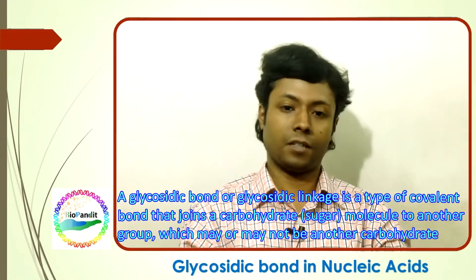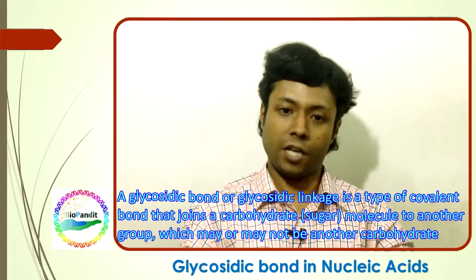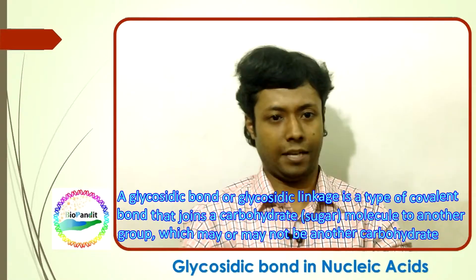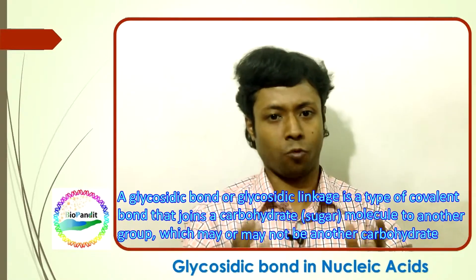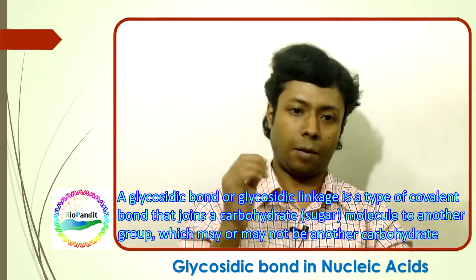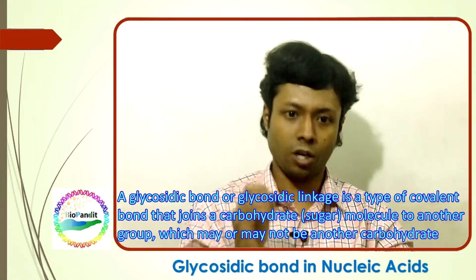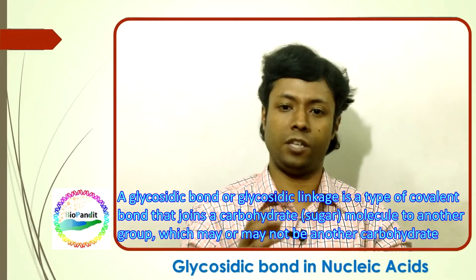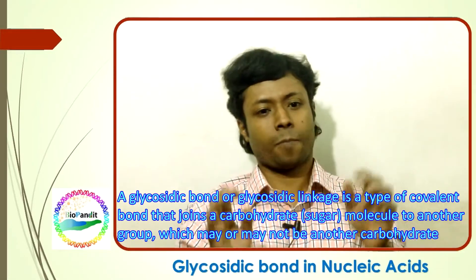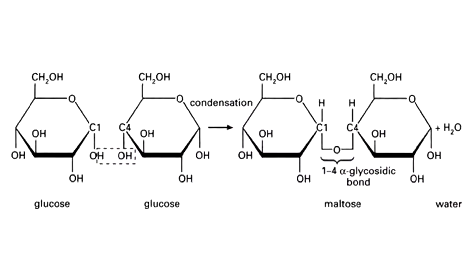In chemistry, a glycosidic bond or glycosidic linkage is the type of covalent bond that joins a carbohydrate or sugar molecule to another group, which may or may not be another carbohydrate. As an example, you can first take a look at this glycosidic bond between two glucose.